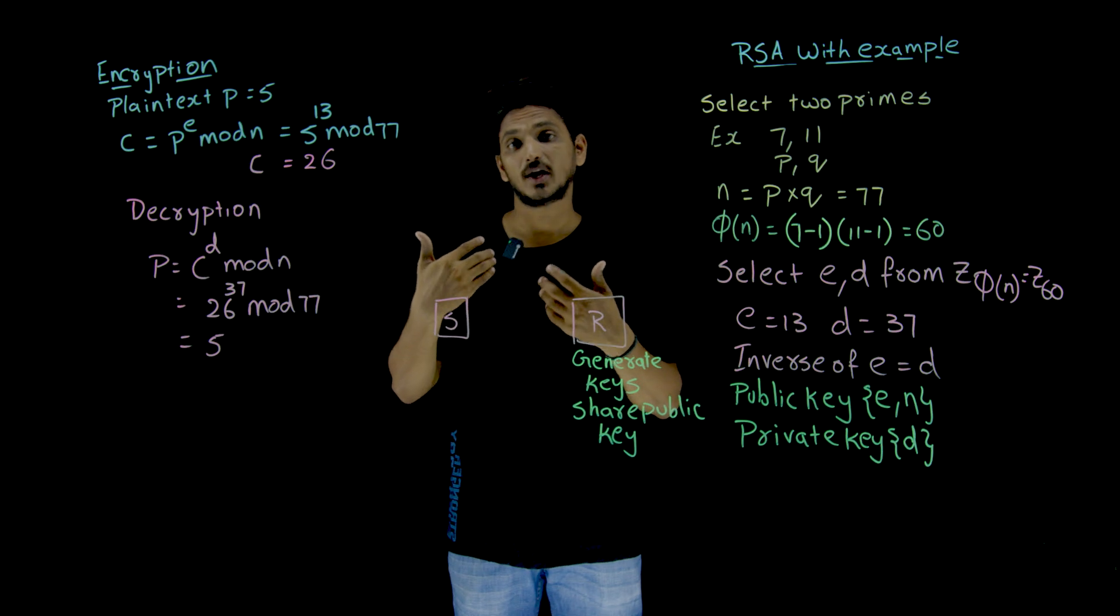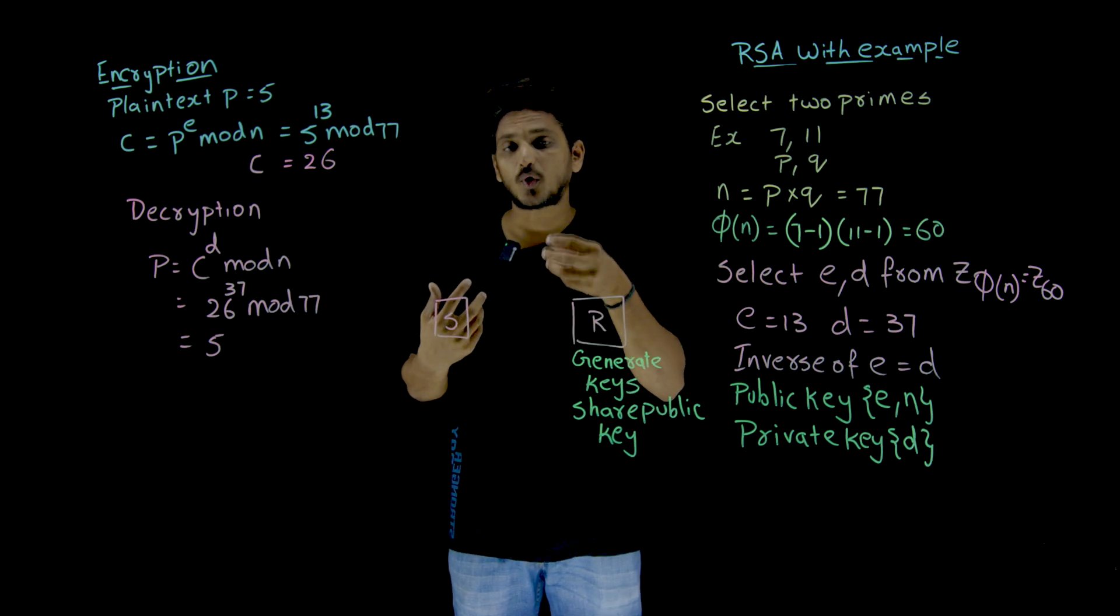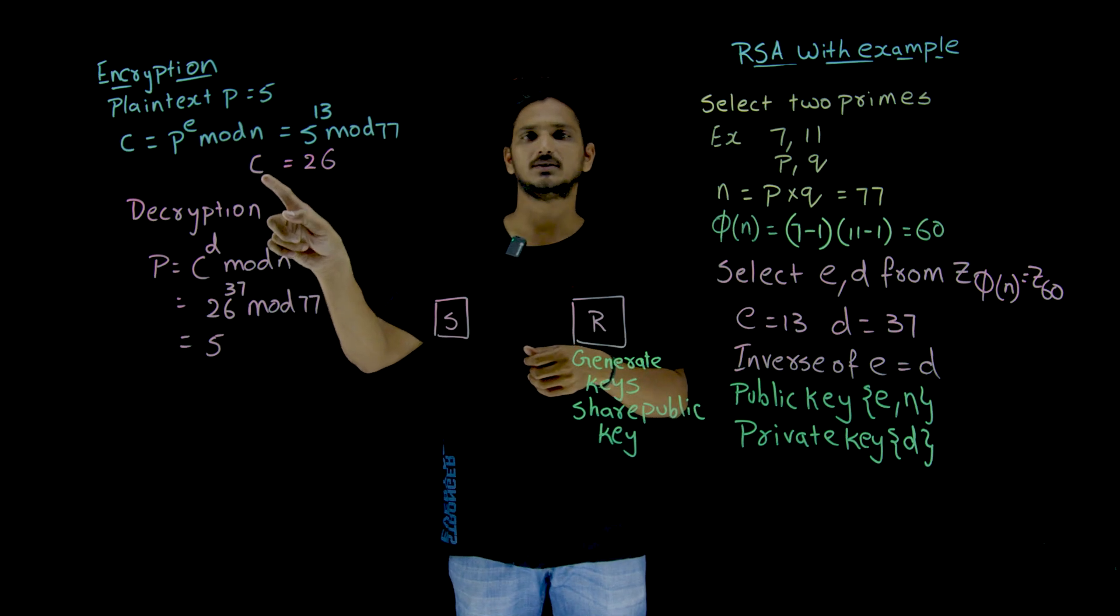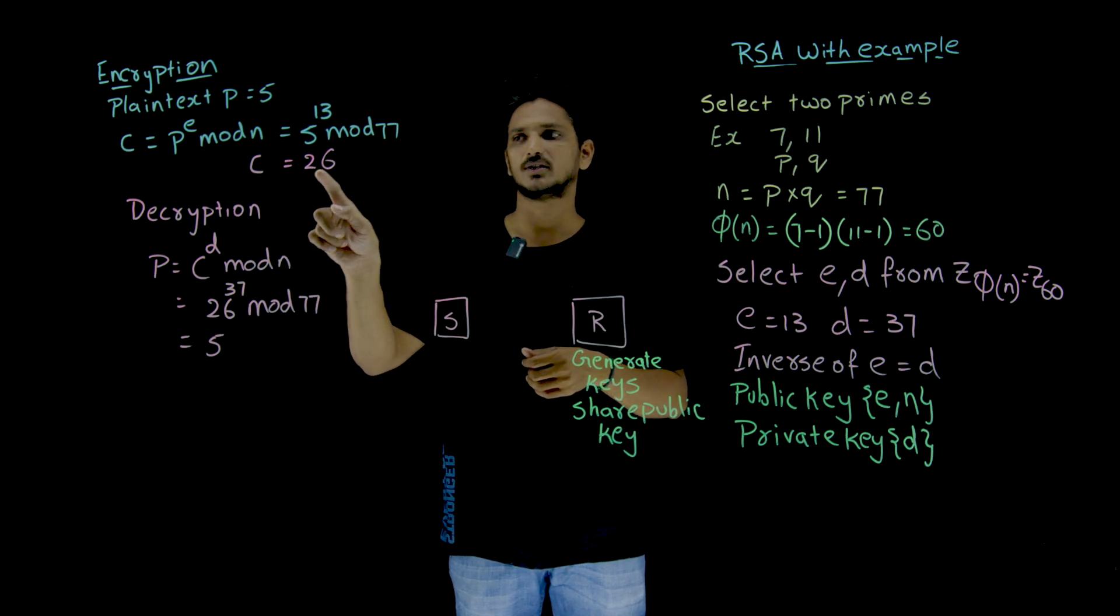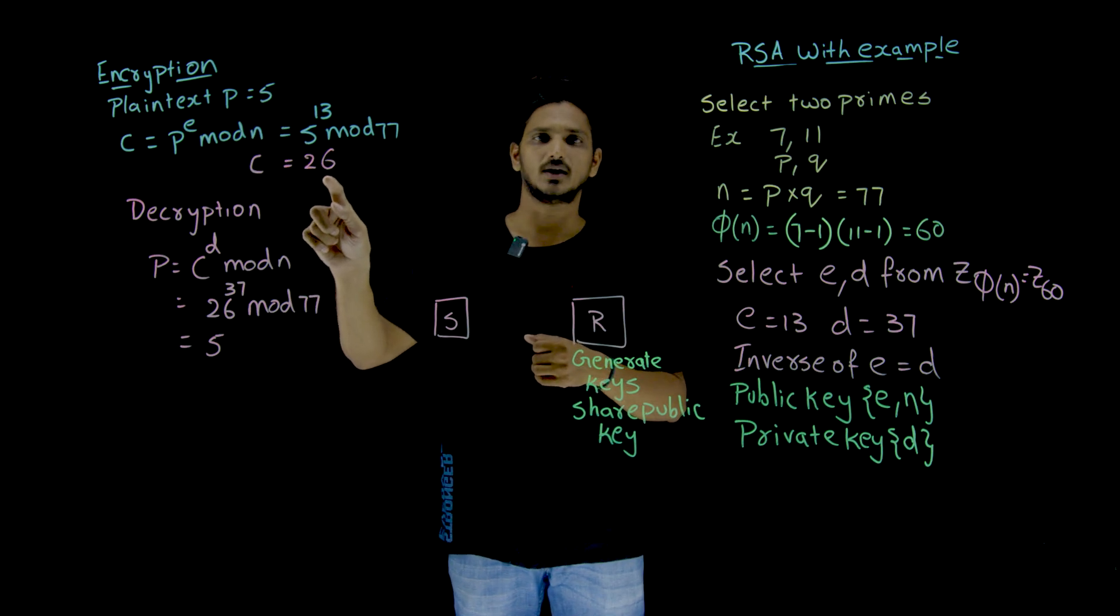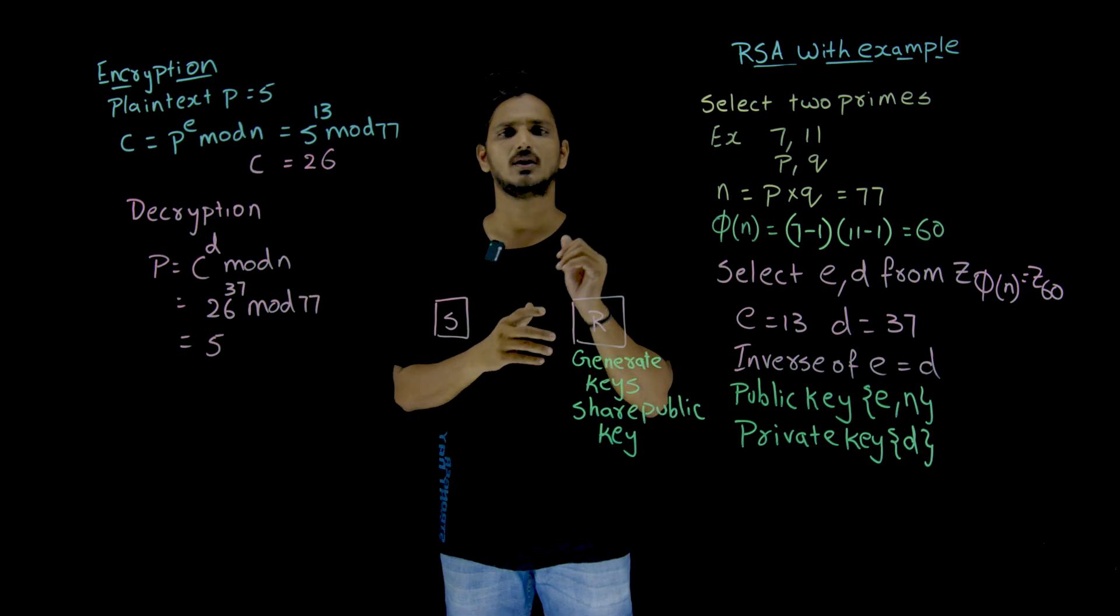Why this matches and why we can do that, this point we are going to understand in our next class. So 5^13 mod 77 gives us C equal to 26. Instead of plaintext 5, we are going to send 26 as our output.